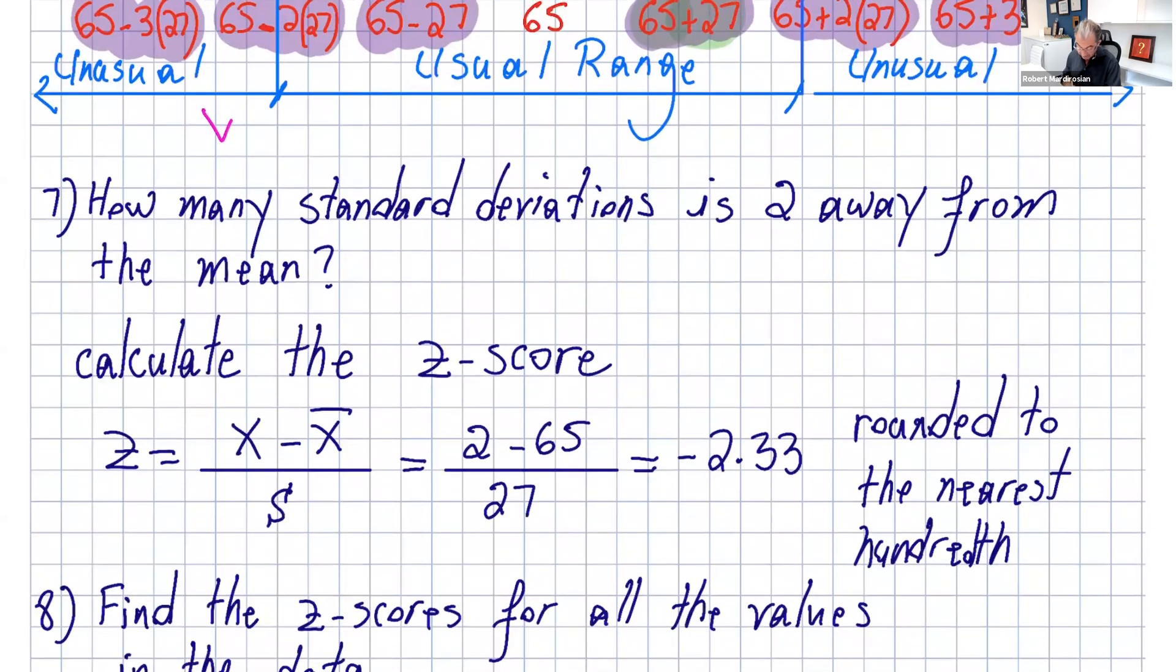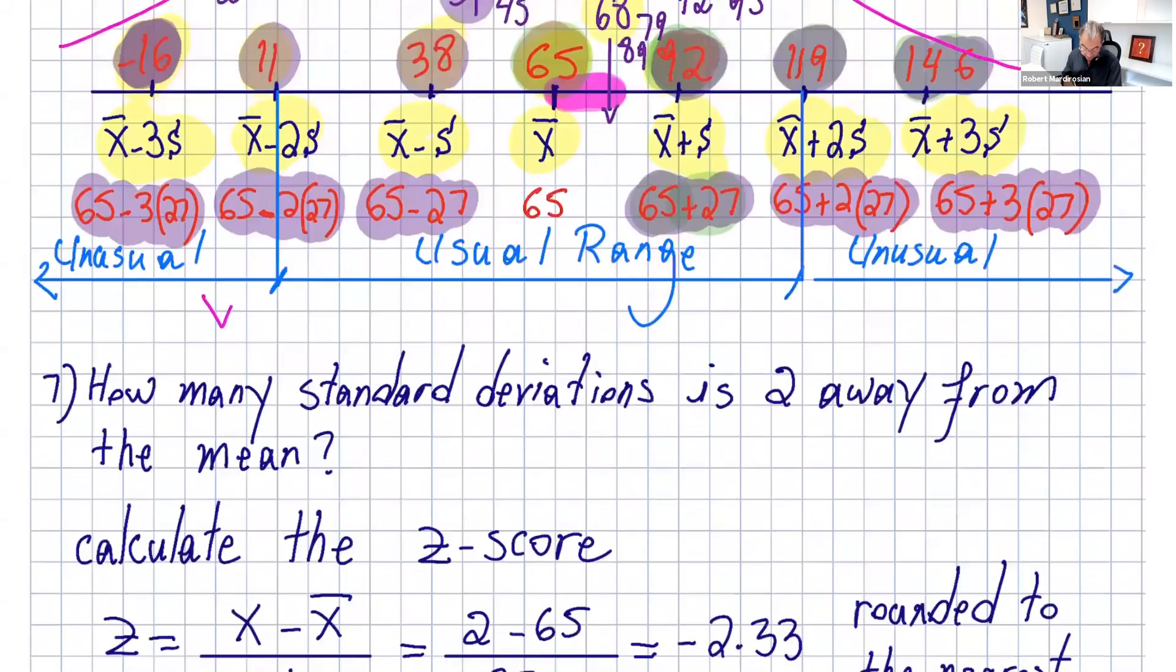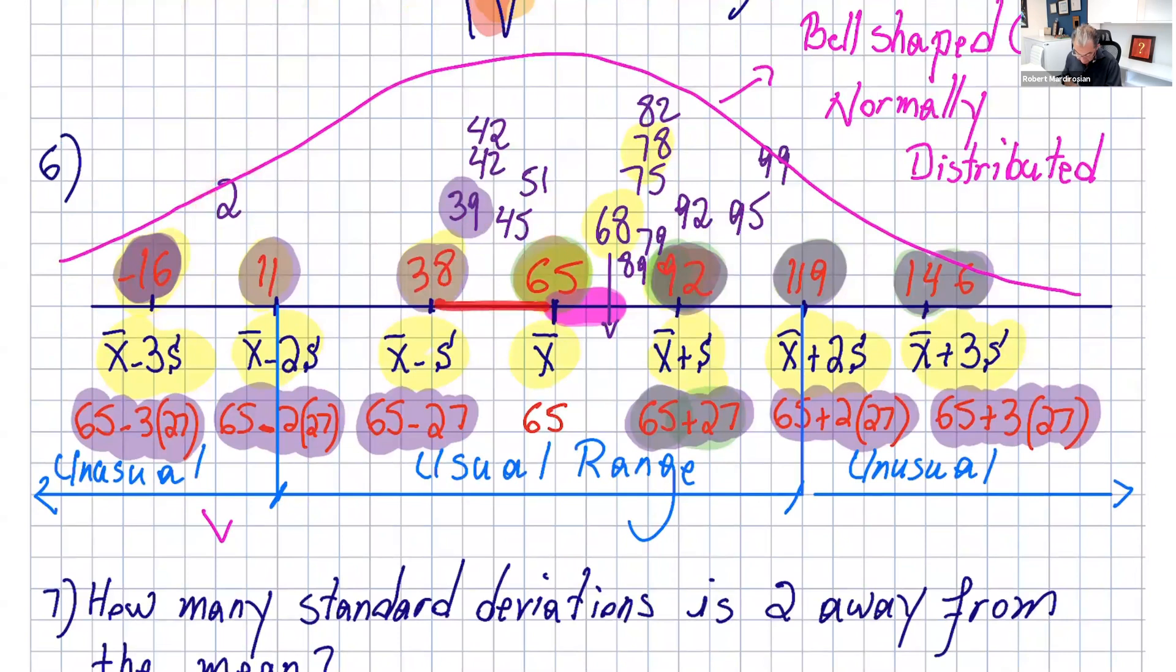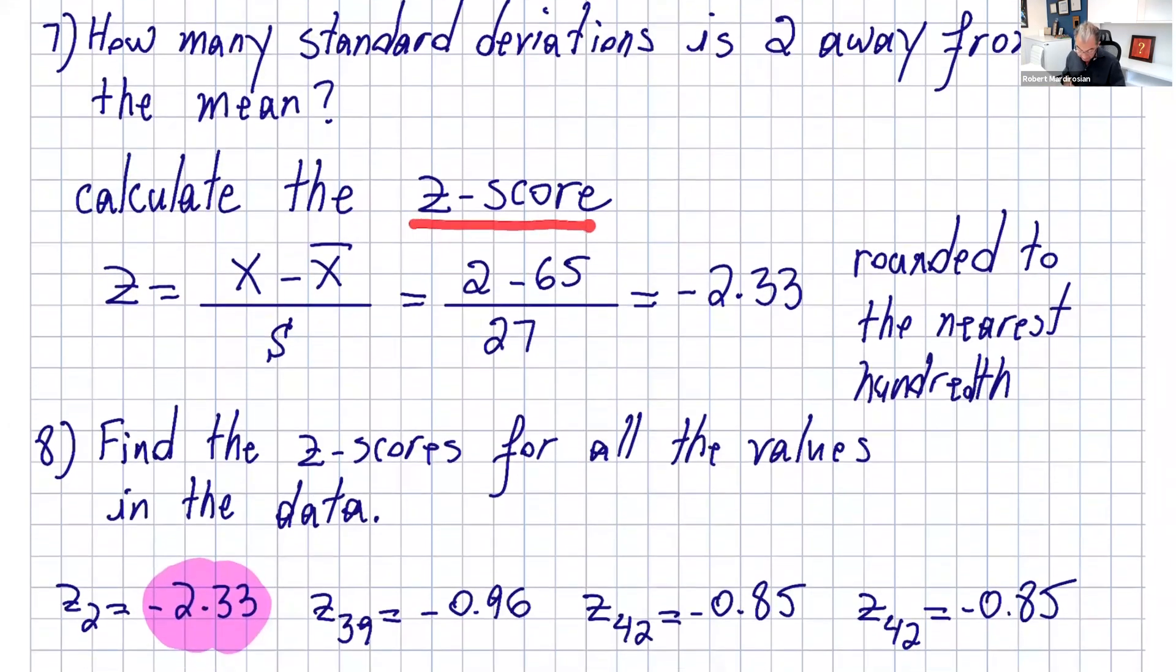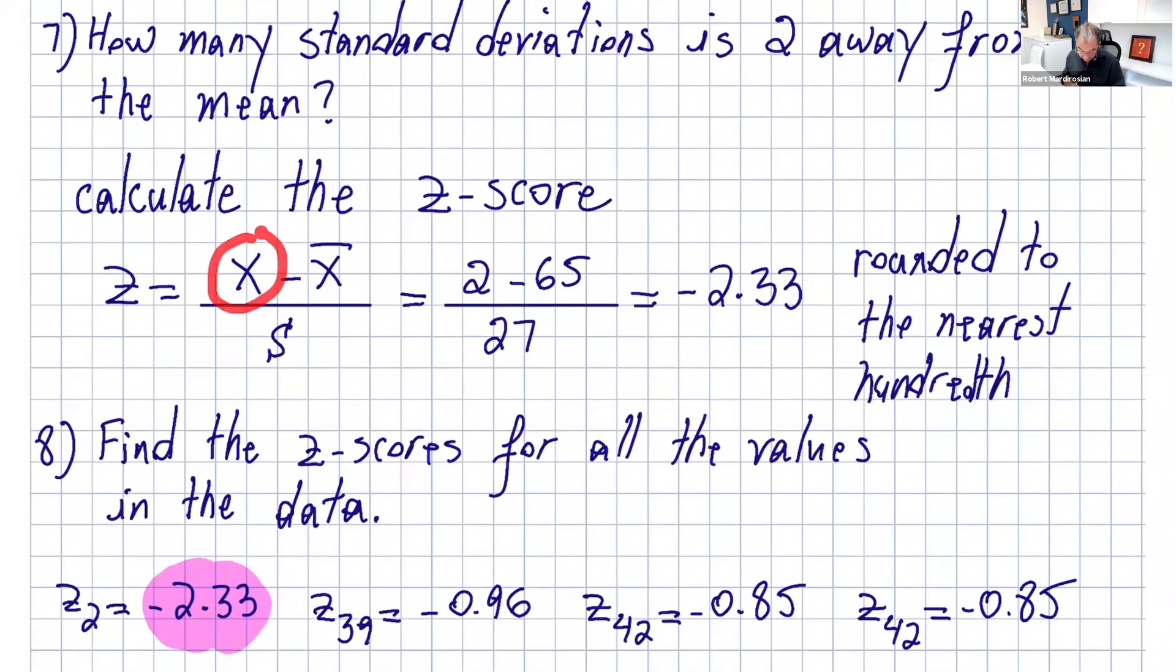You can have a question like this: How many standard deviations is 2 away from the mean? If you want the exact number, you calculate the z-score. The formula is: the number minus the mean divided by standard deviation. If you do that, you get negative 2.33. Round to the nearest hundredth, two digits after the decimal. It's negative because it's to the left of the mean.